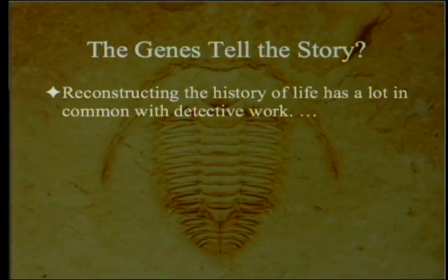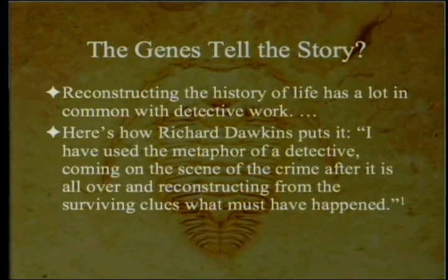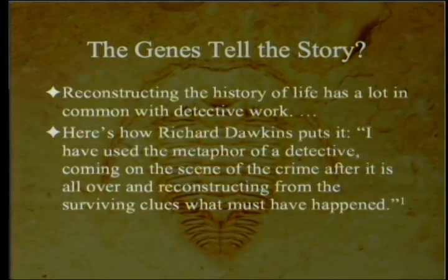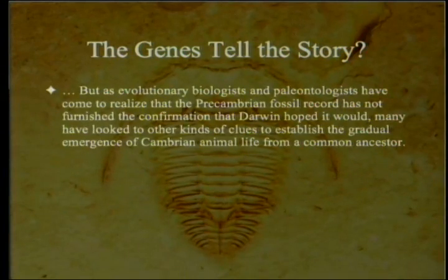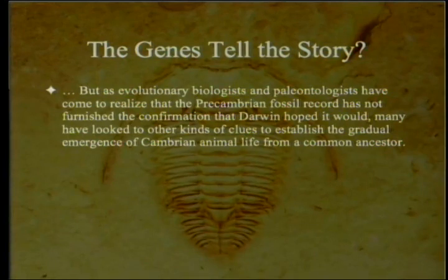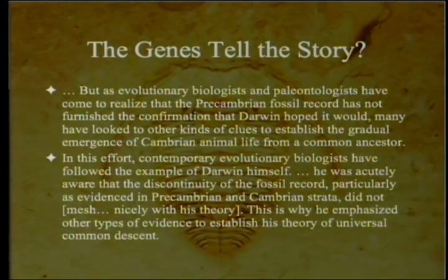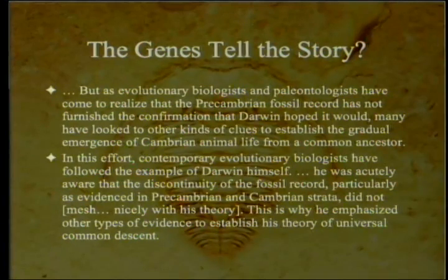Meyer begins a new section by noting that reconstructing the history of life has a lot in common with detective work, citing Richard Dawkins: 'I have used the metaphor of a detective coming on the scene of the crime after it is all over and reconstructing from the surviving clues what must have happened.' But as evolutionary biologists and paleontologists have come to realize that the Cambrian fossil record has not furnished the confirmation Darwin hoped it would, many have looked to other kinds of clues to establish the gradual emergence of Cambrian animal life. Darwin himself emphasized other types of evidence partly because the Cambrian discontinuity did not mesh nicely with his theory.